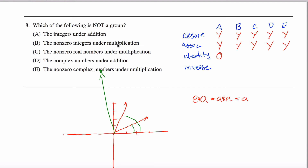For the non-zero integers under multiplication, is there a special non-zero integer that you can multiply any integer by without changing its value? Yes — the number one. One times anything is that anything. The non-zero real numbers under multiplication: yes, still one. The complex numbers under addition: yes, the number zero, or zero plus zero·i. The non-zero complex numbers under multiplication: yes, one will work — specifically one plus zero·i.